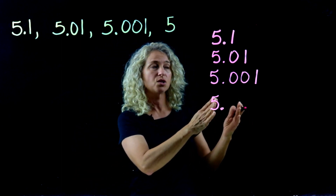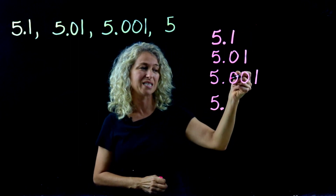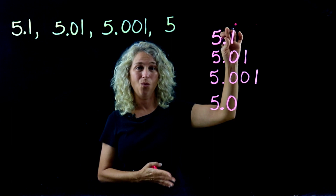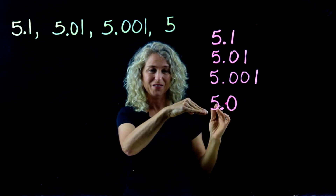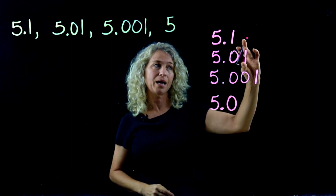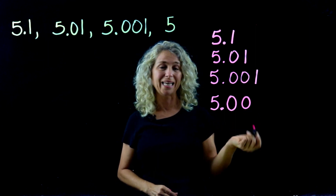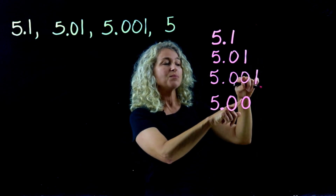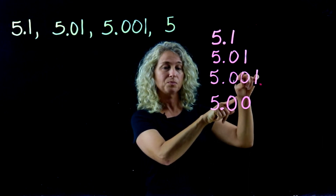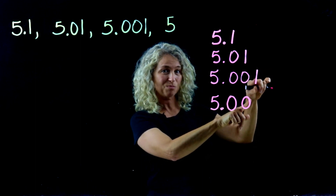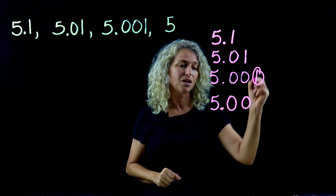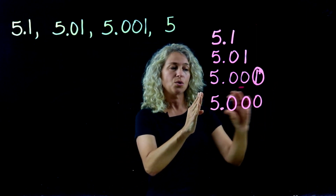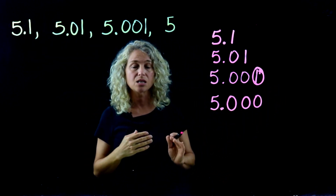We move to the tenths place and compare: one, zero, zero, and nothing — which is also zero. Zero is less than one, so let's compare the three zeros by moving to the hundredths place: one, zero, and nothing again. Zero is less than one. We still need to compare the remaining two, so move to the thousandths place — comparing one versus zero. Zero is less than one in the thousandths place, so the whole number five is the least.